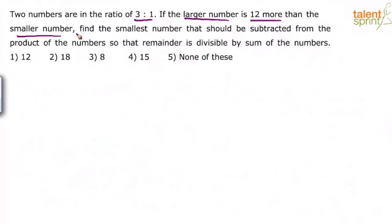By the time you finish reading this, you should be able to figure out what the numbers are — it's not a complex calculation. If you've practiced enough, you'd know the numbers before writing anything down. The concept of ratio tells us: two numbers in the ratio 3 to 1 means the first number has three parts and the second has one part.